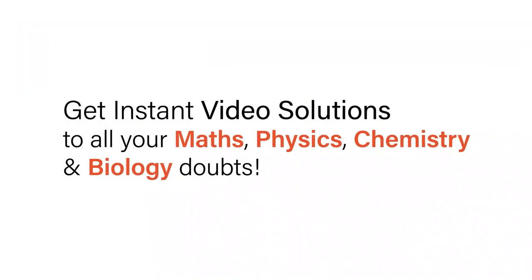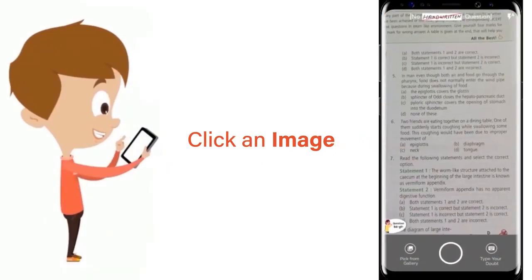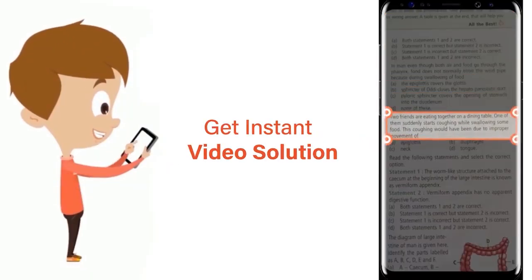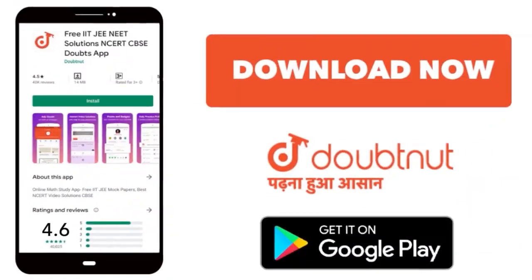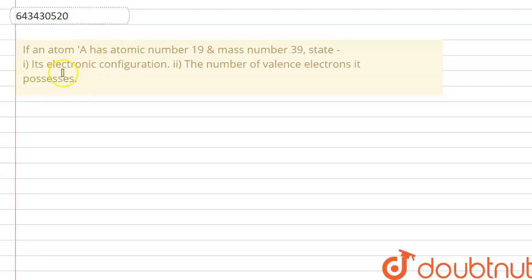With Doubtnet get instant video solutions to all your maths, physics, chemistry and biology doubts. Just click the image of the question, crop the question and get instant video solution. Download Doubtnet app today. Hello everyone, the question is: if an atom A has atomic number 19 and mass number 39, state its electronic configuration and the number of valence electrons it possesses.